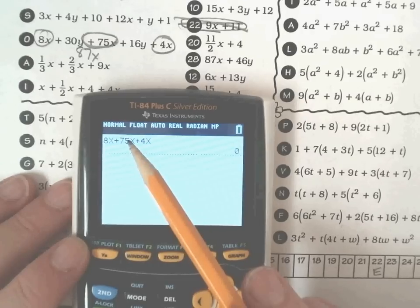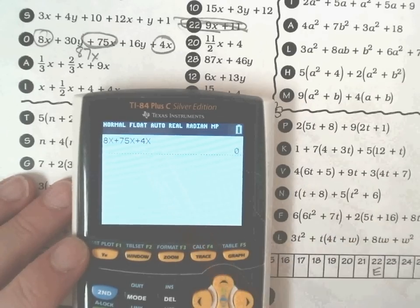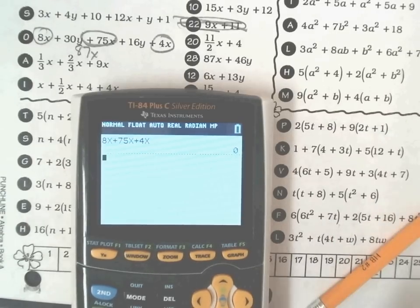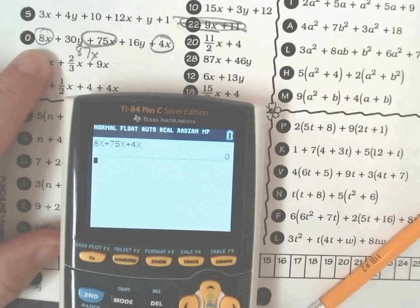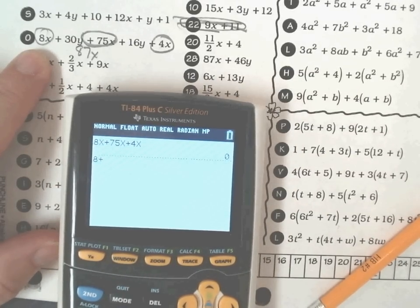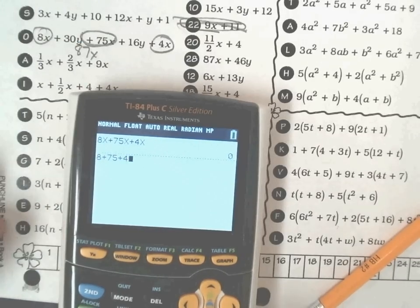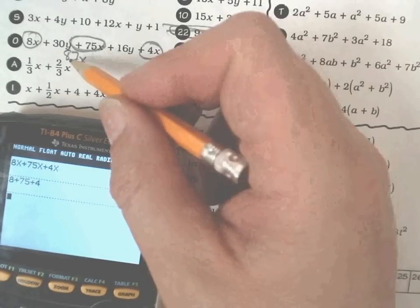So 8 times x is 0 plus 75x is 0 plus 4 times 0 is 0. So 0 plus 0 is 0. So make sure you don't use, even though this says 8x, I'm just going to put 8 in the calculator. I'm just going to put 75 in the calculator. And I'm just going to put 4 in the calculator. But make sure when you write down that 87 that you know it's 87x's.